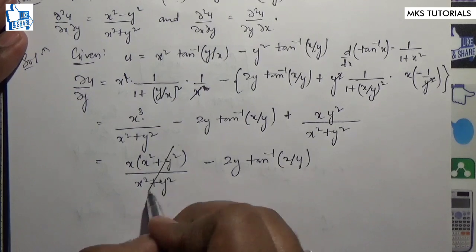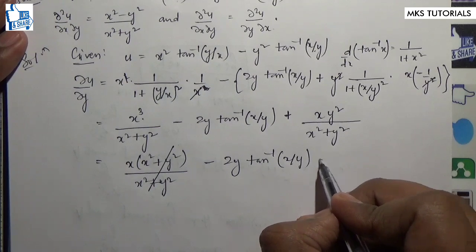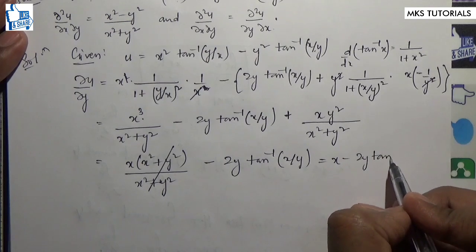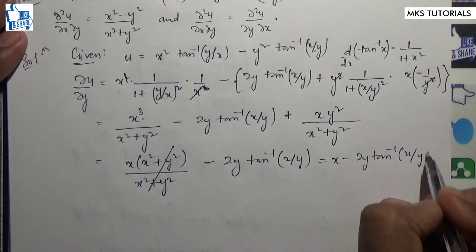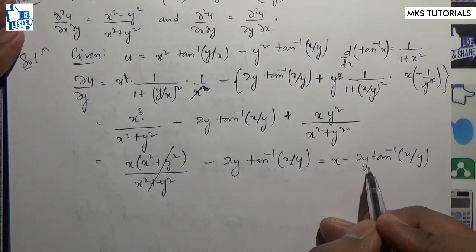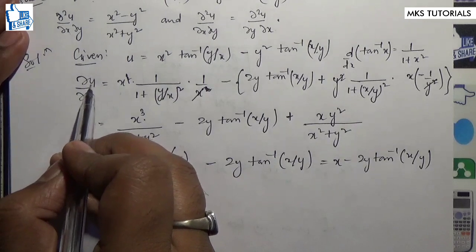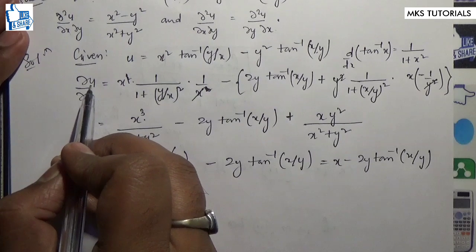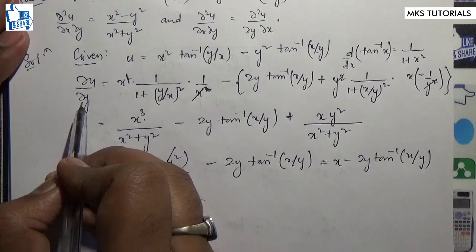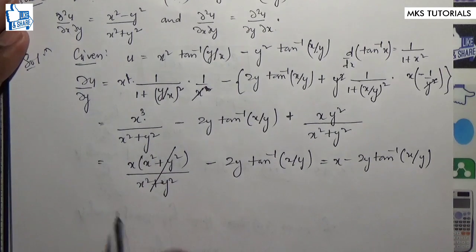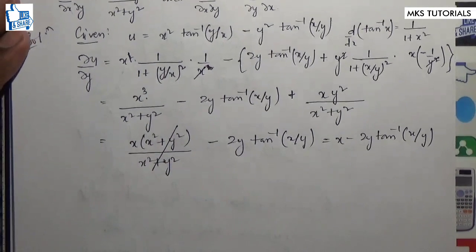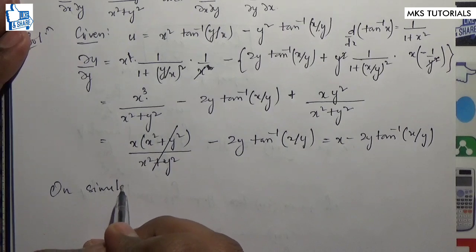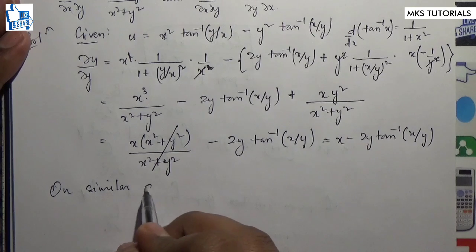So this will become x minus 2y·tan⁻¹(x/y). When I differentiate u partially with respect to y, I got this result.